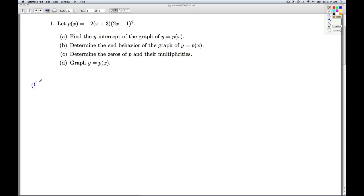In part C, we're asked to determine the zeros of P and their multiplicities. So what are the zeros of P? By definition, those are the X values that make P of X equal to zero.